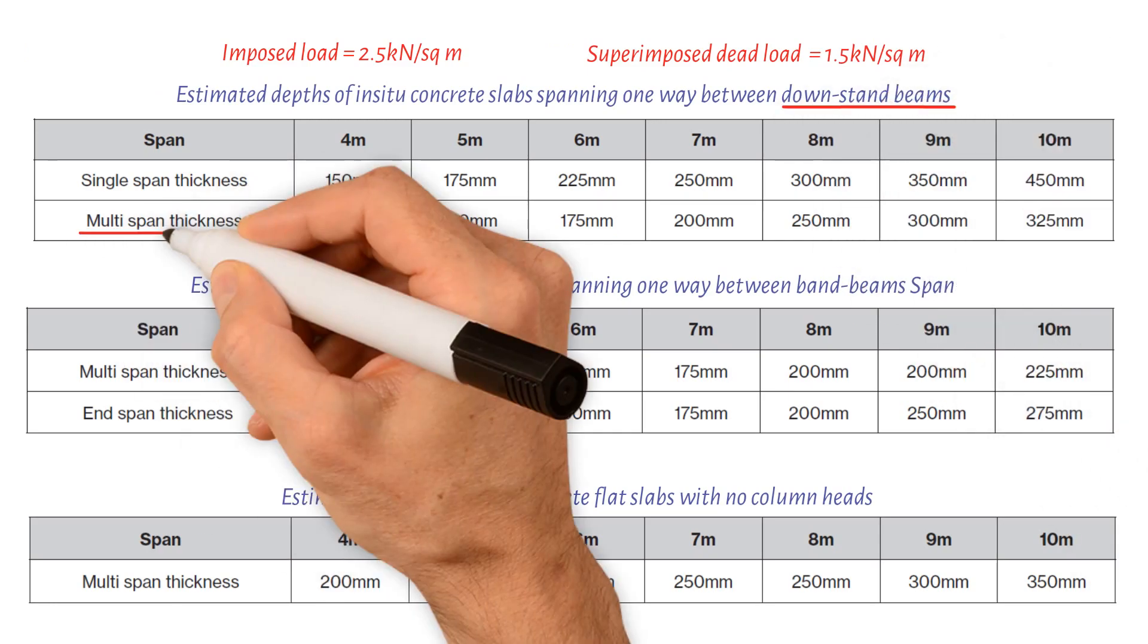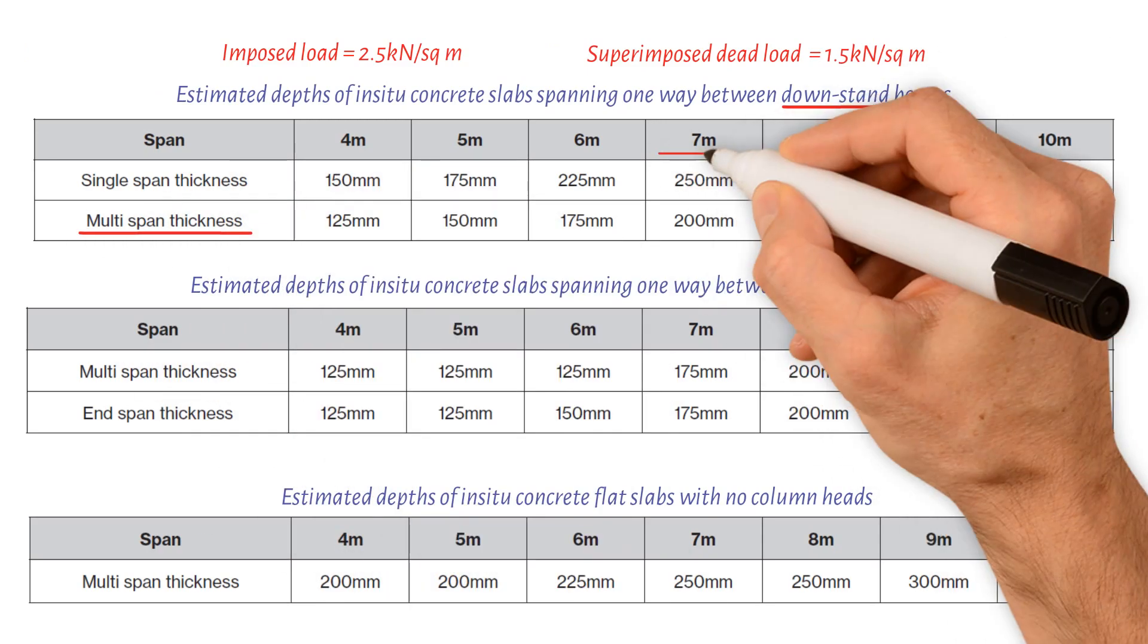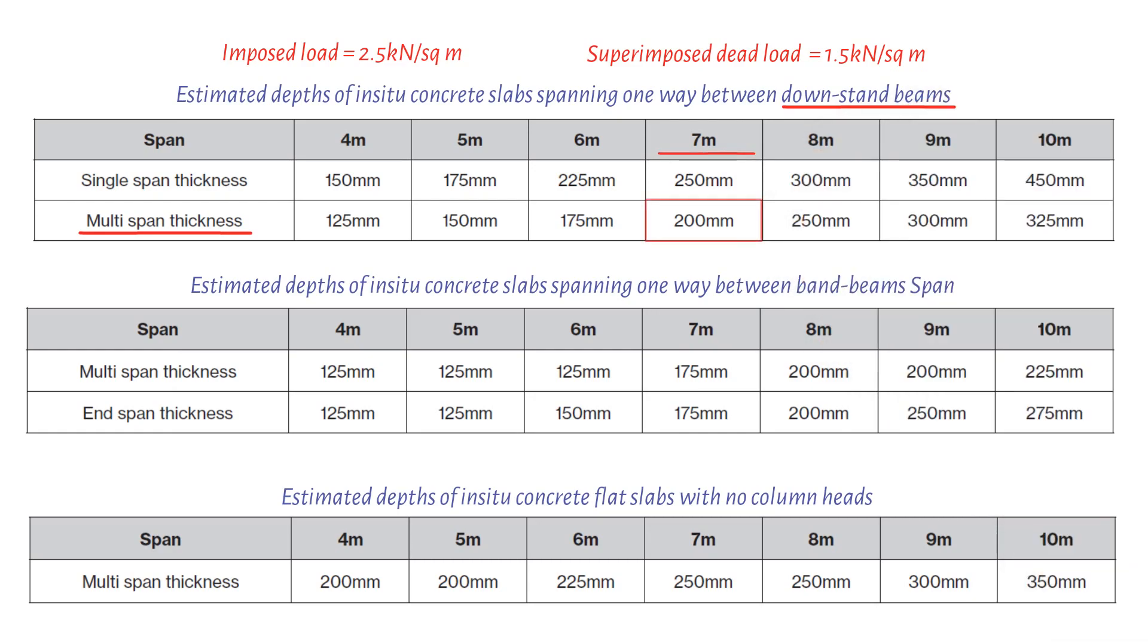First, for a downstand beam solution for multi-span slab, due to 7 meters span, the slab depth equals 200 millimeters.